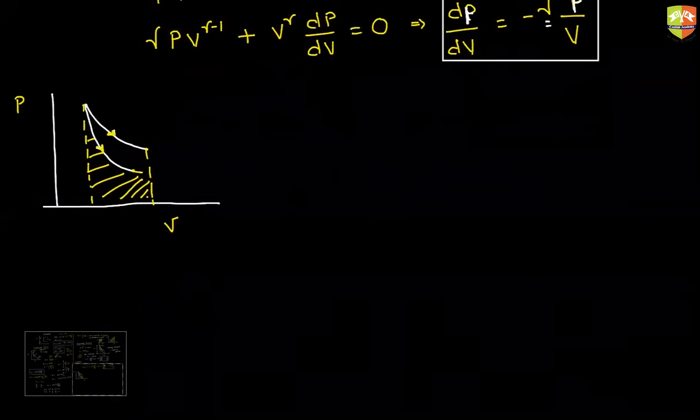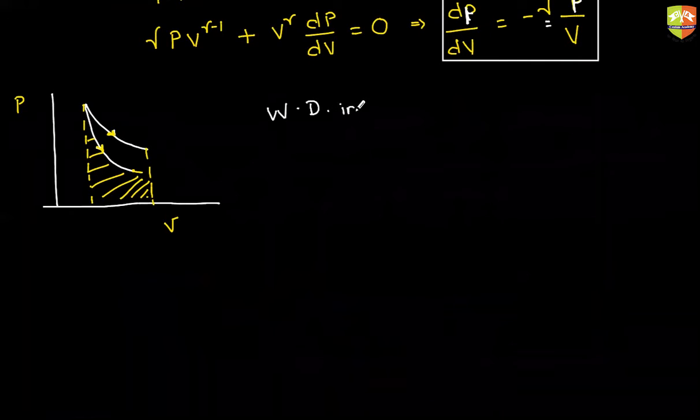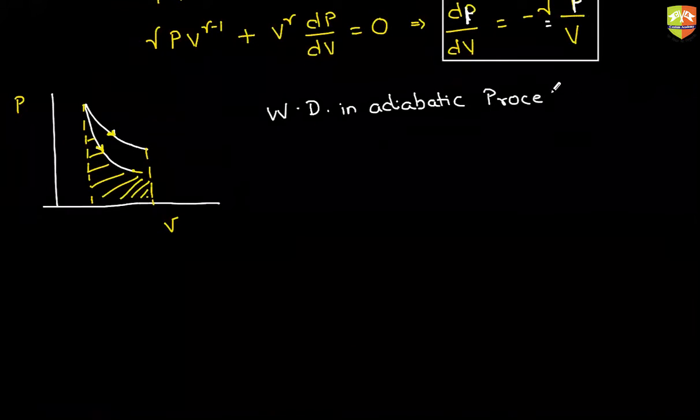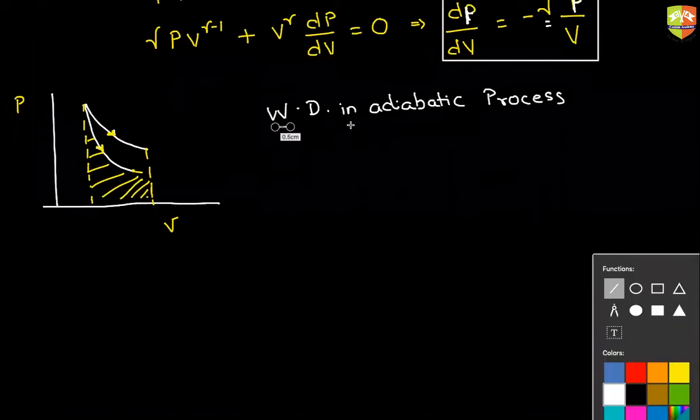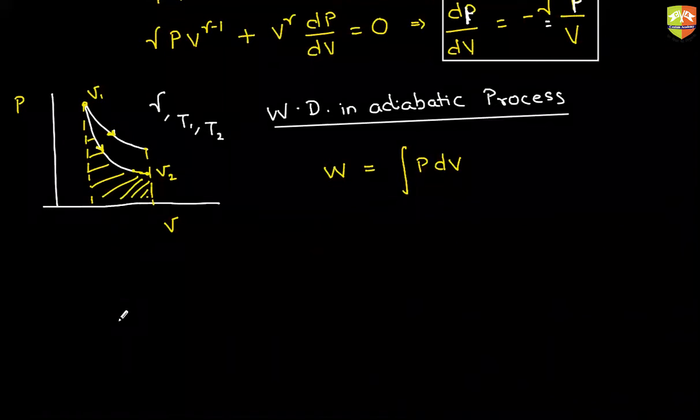Now let us calculate the work done in the adiabatic process. So work done is integral of PdV. Let us say the initial volume is V1 and final volume is V2. Can you write down the expression in terms of these quantities? Let us say gamma is given to us, and T1, T2 temperatures also given to us. Derive it yourself.